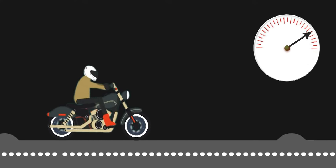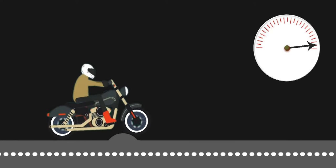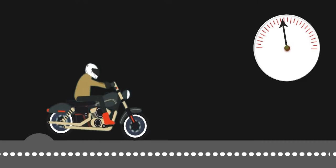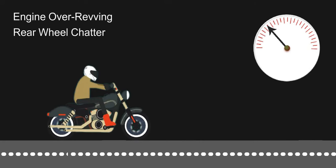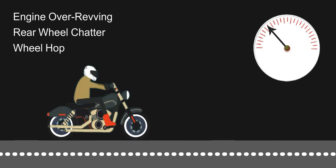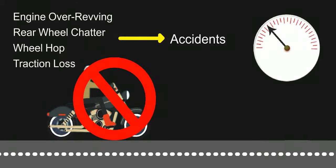While riding at high speed, if you face a scenario like these, you are compelled to make multiple downshifts or decelerate the engine suddenly. This may cause engine over-revving, which is not good for the engine, or it leads to rear wheel chatter, wheel hop, and traction loss due to sudden engine braking, which may cause serious accidents.